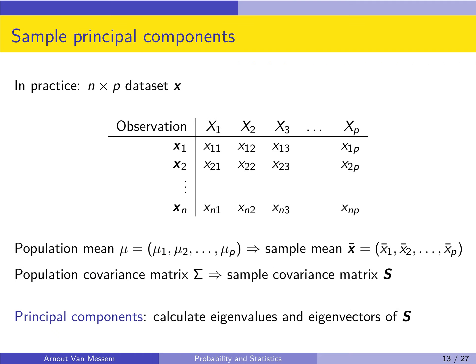Everything before was the theory behind principal component analysis. In practice, we have an n times p dataset — n observations for p variables. We can calculate the sample mean and the sample covariance matrix. We don't know the population mean, so we estimate it through the sample mean. We don't know the covariance matrix sigma, so we estimate it through the sample covariance matrix S. To find the principal components, we use S and calculate its eigenvalues and eigenvectors.